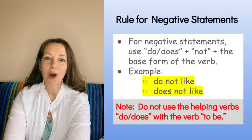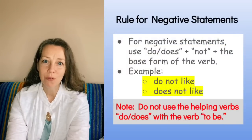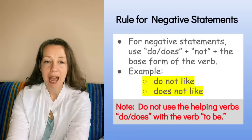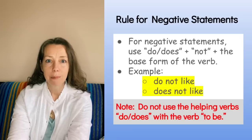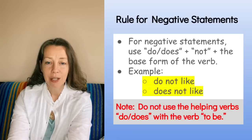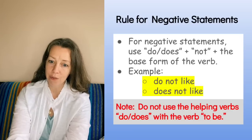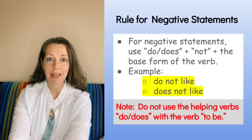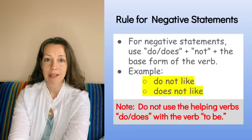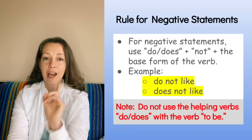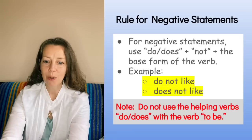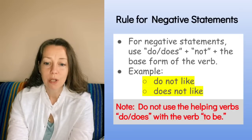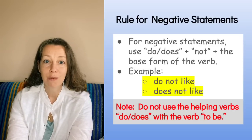Now we can move on to the rule for negative statements. For negative statements, add 'do' or 'does' plus 'not' plus the base form of the verb — for example, 'do not like' or 'does not like.' Note: do not use the helping verbs 'do' or 'does' with the verb 'to be.'